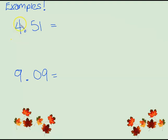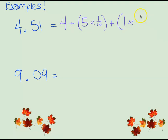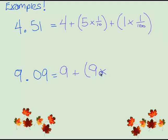Now we get to do it for ourselves. We have four, a whole number, and then five tenths. Five times a tenth gives me five tenths. What about this one? It's in the hundredths place — we need one times one hundredth. And then one hundredth again — see if you can do it before I do, you can always pause the video. Nine plus — we have zero in the tenths column, so we don't need zero times a tenth. Moving on: we have nine in the hundredths column, so nine times a hundredth.